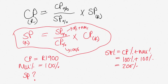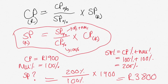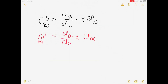Now we're going to use the selling price formula and substitute in the values. Our selling price is going to be equal to our selling percent — which is 200% — divided by our cost price percent — which is 100% — multiplied by our cost price in rands, which is R1,900. If you pause the video and quickly work that out on your calculators, you should get a selling price of R3,800.